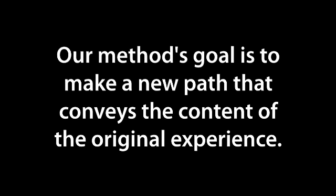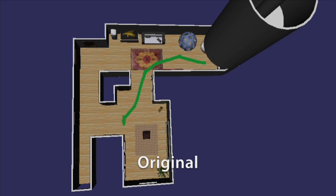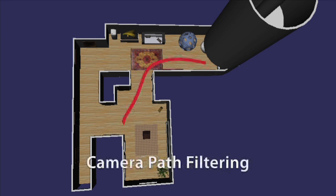Our method's goal is to make a new path that conveys the content of the original experience. Here's an original unfiltered path containing 1400 viewpoints. The camera path filtering result, while smooth, doesn't show all of the items seen in the original.